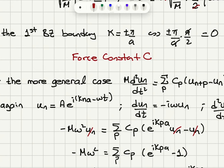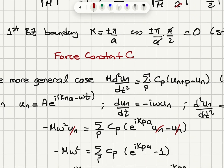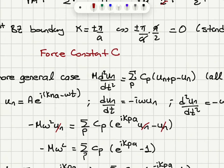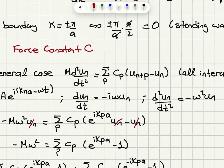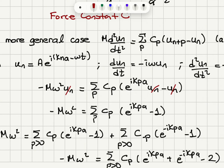Once again, we have the traveling wave solution A·e^(i(kna − ωt)). Taking derivatives: the first derivative with respect to time gives −iω·uₙ, and the second derivative gives −ω²·uₙ. So on the left-hand side we have −mω²uₙ. On the right-hand side, we have Σₚ cₚ, where uₙ₊ₚ will have a phase difference with respect to uₙ by e^(ikpa). So e^(ikpa)·uₙ − uₙ. Because uₙ appears on both sides, they cancel, and we find −mω² = Σₚ cₚ(e^(ikpa) − 1).